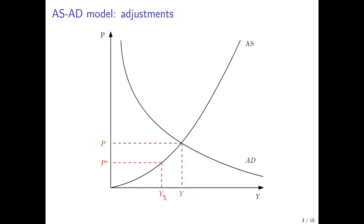We have a certain natural output level in an economy with a natural rate of unemployment for which prices would not accelerate. That is the non-accelerating inflation rate of unemployment, where price expectations would be consistent with actual prices and we would not have an acceleration of inflation. That would be at the natural level of unemployment.